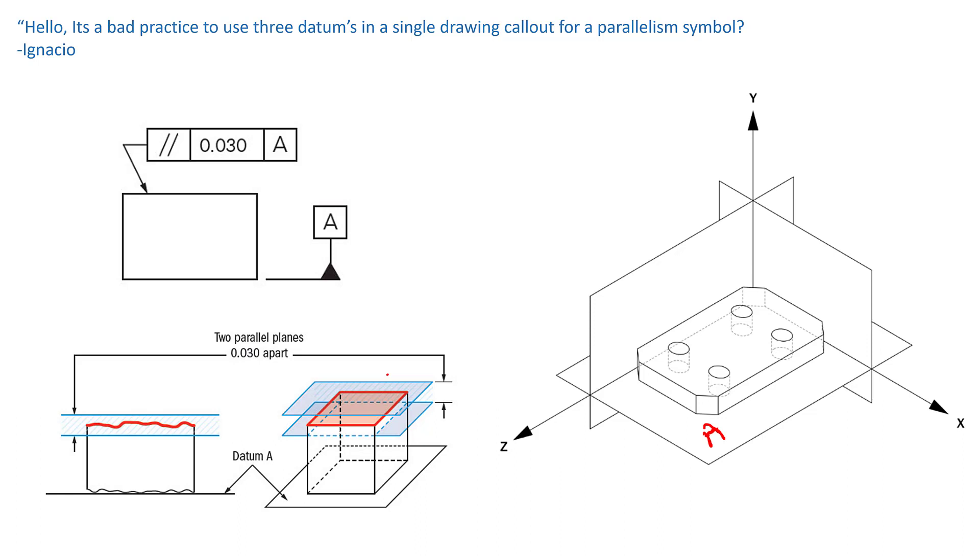Now, if we added B in there, could the top surface be parallel to B? Well, let's say that this is B, and we'll say this is C. And it really doesn't matter which one's which in this case. But that top surface could never be parallel to B or C. So right off the get-go, that would confuse everybody on what is meant by that.